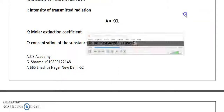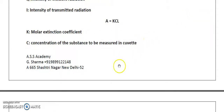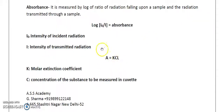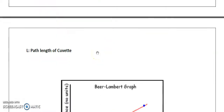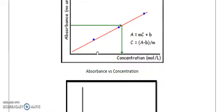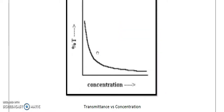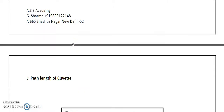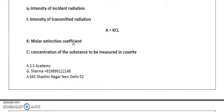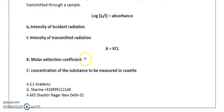We can equate transmittance to 10 to the power KCL, or I by I-naught. If we invert these terms, transmittance means the intensity of the final radiation to the initial radiation. Transmittance is equal to 10 to the power minus KCL.